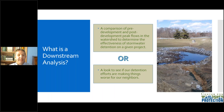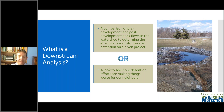So what is a downstream analysis? The official definition is a comparison of pre-development and post-development peak flows in the watershed to determine the effectiveness of stormwater detention on a given project. The simpler definition — how I like to think of it — is it's a look to see if our detention efforts are making things worse for our neighbors. Downstream analysis gives us an idea of how stormwater detention on a development site will affect what happens in the rest of the watershed.